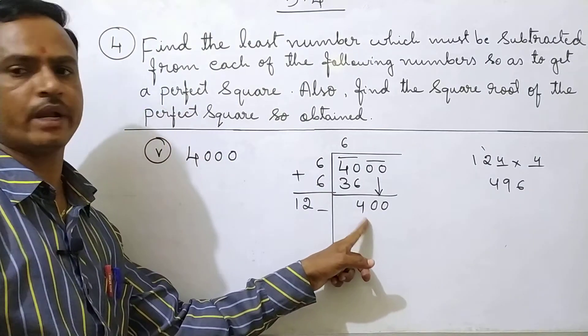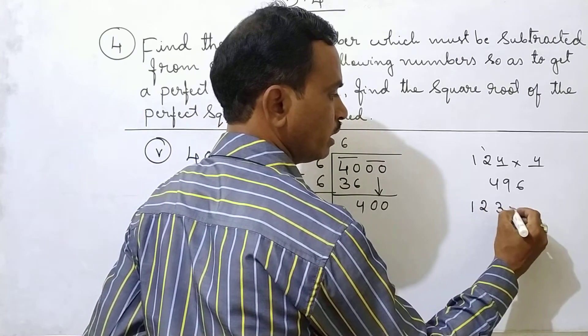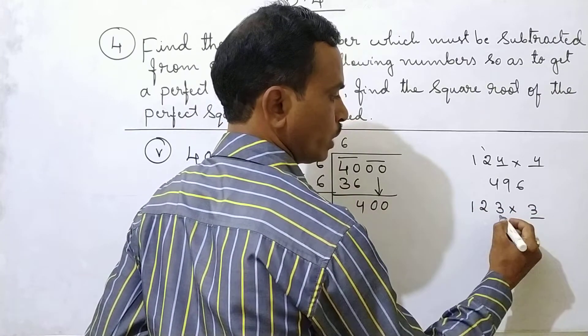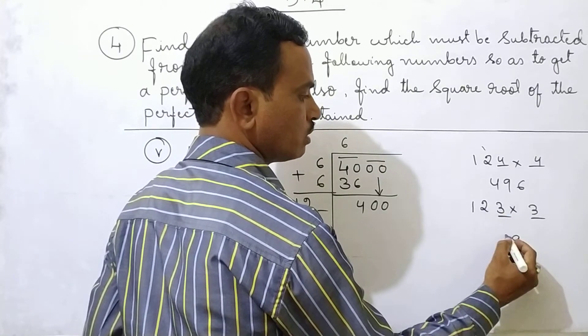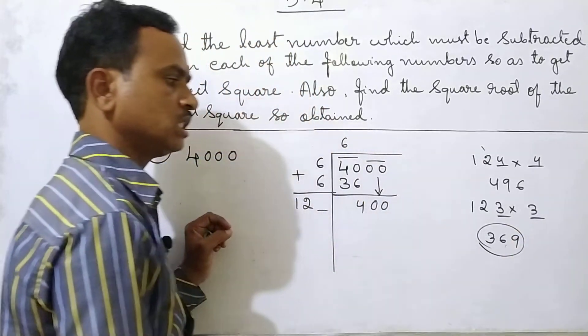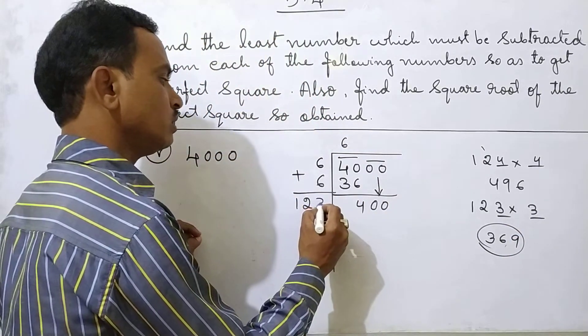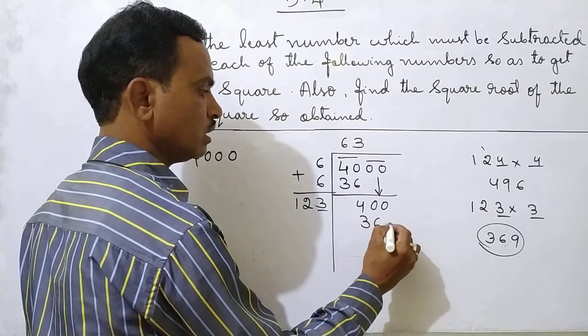So that is greater than 400. So you take less number. 123 into 3. 3,3 is 9. 3,2 is 6. 3,1 is 3. So you should take 369. That is 123,3 is 369.